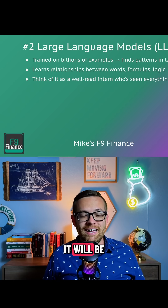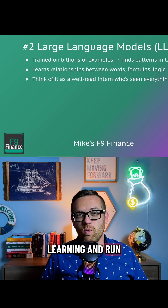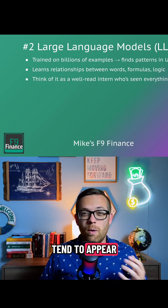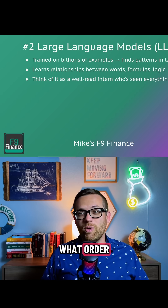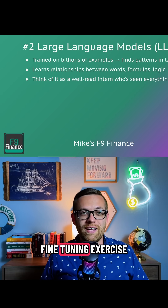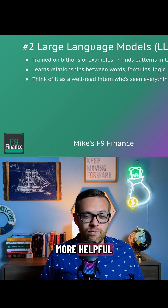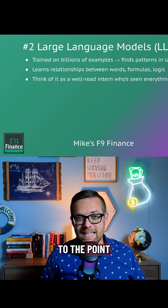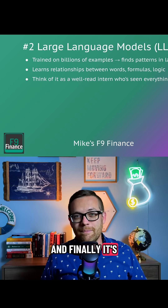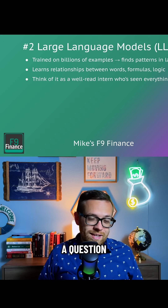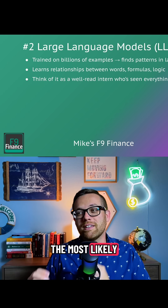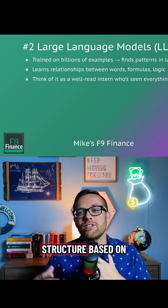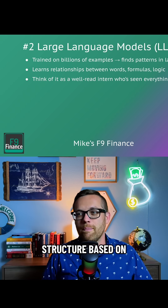After it's been trained on the data, it will be run through machine learning to learn patterns. It's going to figure out which words tend to appear together and in what order. Then humans will go through a fine-tuning exercise, helping it sound more helpful, accurate, and hopefully polite and to the point. Finally, it's going to do an inference — when you ask a question, it predicts the most likely response based on what it's seen before, based on the structure and the patterns.